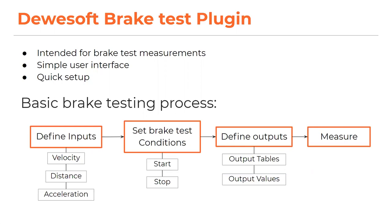How does the brake testing process look like? First, you define inputs for brake tests, which are velocity, distance, and acceleration that you get out of your GNSS device. Then you set brake test conditions, define the outputs you want to have, and you can start measuring.